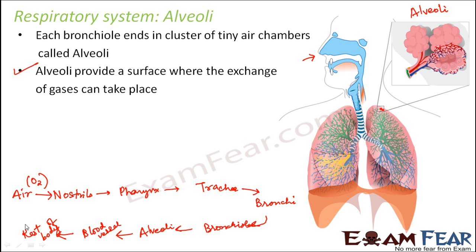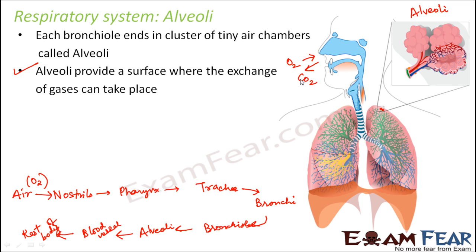When each cell receives oxygen, the process of cellular respiration takes place — that is, oxidation of food occurs. As this process takes place, carbon dioxide is produced. The cells do not need carbon dioxide, so it is given by each cell back into the blood vessels. The blood vessels bring it to the alveoli, then to the bronchioles, bronchi, trachea, pharynx, nostrils, and finally carbon dioxide is expelled out.